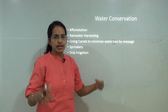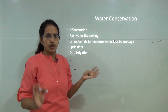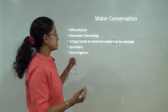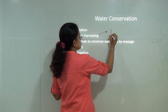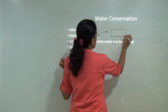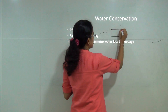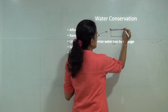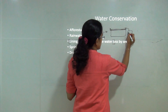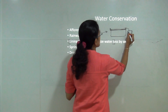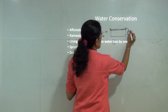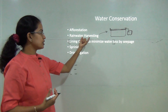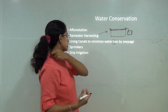To conserve water, planting more trees helps bind soil and promotes more rainfall and a healthy ecological setup. Rainwater harvesting in dry areas involves collecting rainwater on flat rooftops, which flows into attached tanks. This stored water is used during dry months. This is an effective water conservation technique.